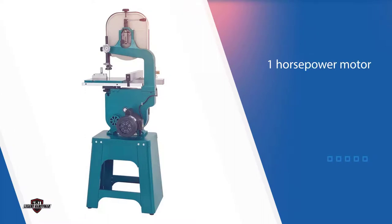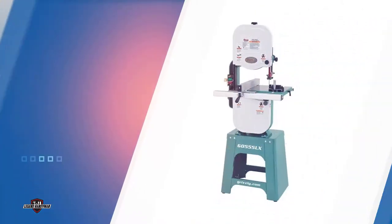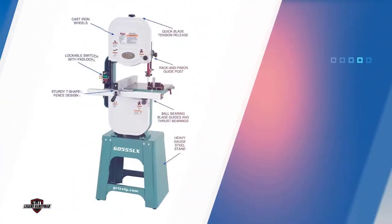The one horsepower motor as well as the 9 3/4 inch blade enable the G0555LX model to cut through most materials with ease. You can choose between 1800 and 3100 FPM blade speeds that are perfectly suited for power and fine cuts.